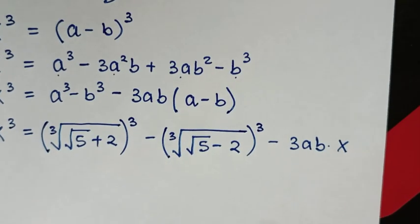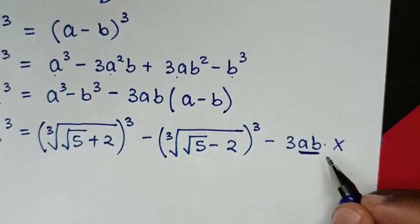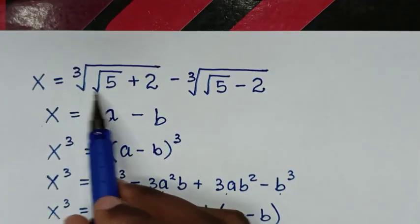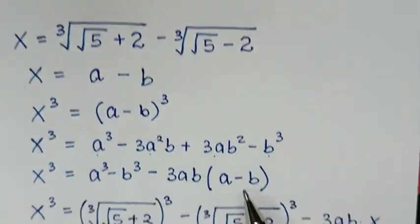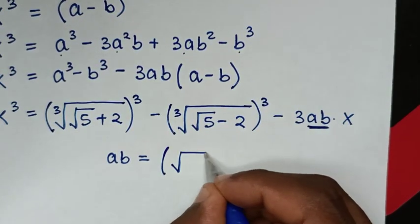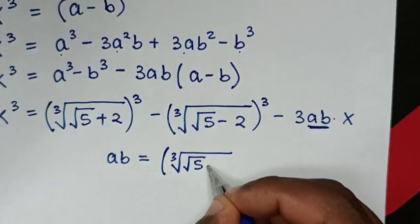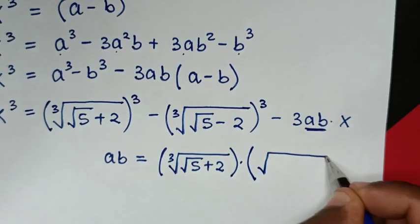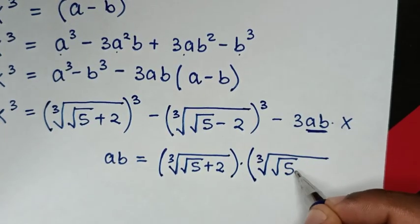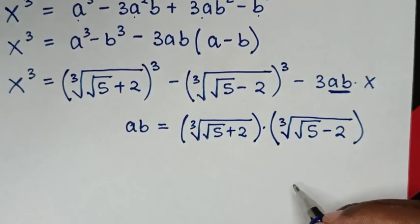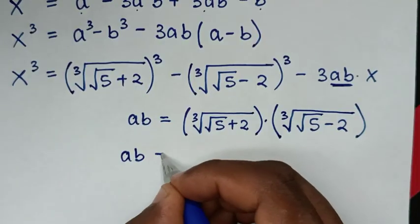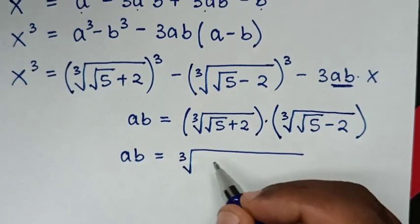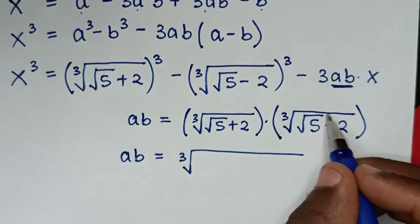Since we don't know the value of a times b, we need to calculate it. So a times b equals the cube root of (square root of 5 plus 2) times the cube root of (square root of 5 minus 2). Since they share a common cube root, we can combine them under one cube root.